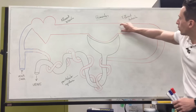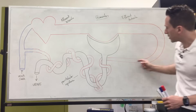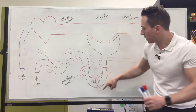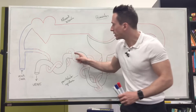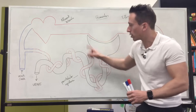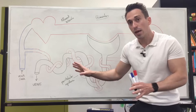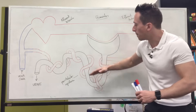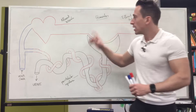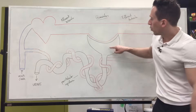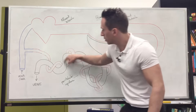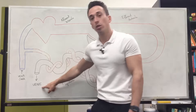Once the efferent arteriole snakes itself around the tubules and becomes the peritubular capillaries, this is where gas exchange can happen to the cells of the tubules. It's also the place where things get thrown back into the blood. The take-home message is this: whatever remains in the capsule and the tubules turns into urine.